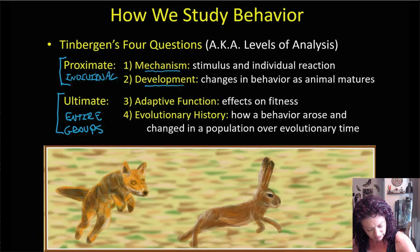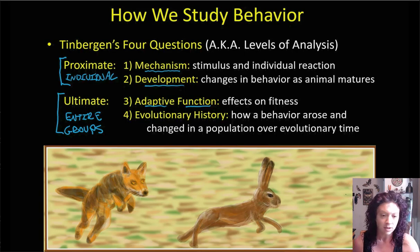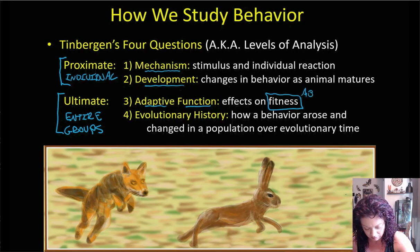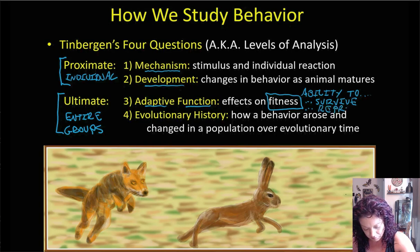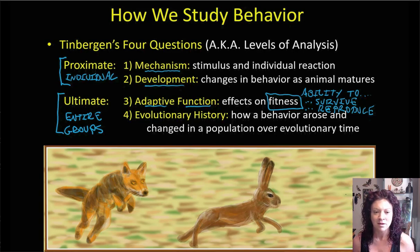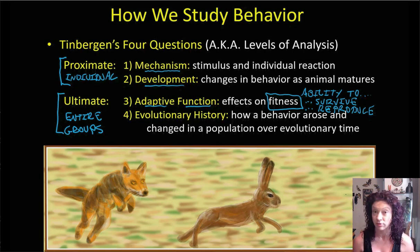Adaptive function refers to how a behavior increases an animal's ability to survive and reproduce — that's what we refer to as fitness. The fitness of an organism refers to both its ability to survive and reproduce. Usually we think of this in terms of animals being able to survive long enough to reproduce. Adaptive function refers to how a particular behavior has allowed an entire group of organisms to evolve over generations, long enough at least to replace themselves and have offspring that replace them in the next generation.